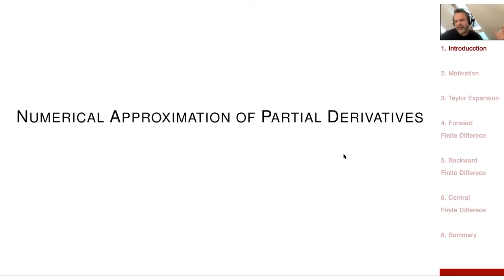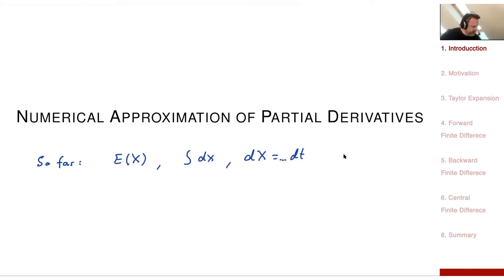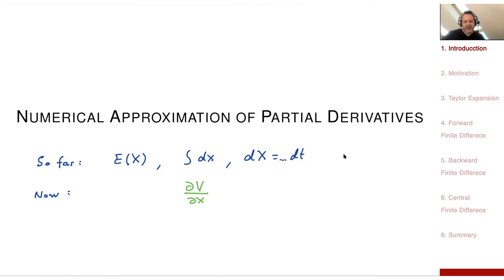So far in the lecture we looked at calculating an expectation, which was related to approximating an integral — the Monte Carlo integration. We were also looking at discretizing SDEs. Today I'd like to look at calculating a partial derivative. So given some function v, how can I approximate dv/dx? This is the inverse to the integral.